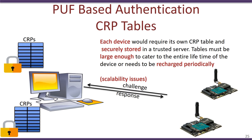Each CRP table is device-specific because each CRP corresponds to the unique challenges and responses of each device. This becomes much worse when multiple devices are managed by a single server, requiring multiple large CRP tables stored in the server database. Another concern is that if these CRP tables are stolen or the server's privacy is breached, the entire security of the PUFs corresponding to those devices would be lost. Researchers have been exploring techniques to reduce the size of CRP tables or eliminate their use entirely in PUF-based authentication.